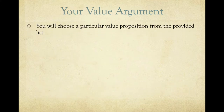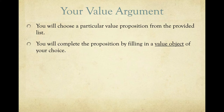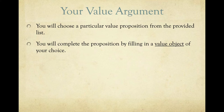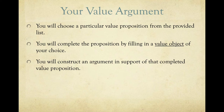For your value argument, you'll choose the particular value proposition from the list and complete it by filling in a value object of your choice selected from the category to which the proposition refers. So if it is about the best film ever made, you pick the film — from the category of films, you select the one value object you consider the best. The same would be true for novels, restaurants, poems, museums, or universities. Then you'll construct an argument in support of that completed value proposition.